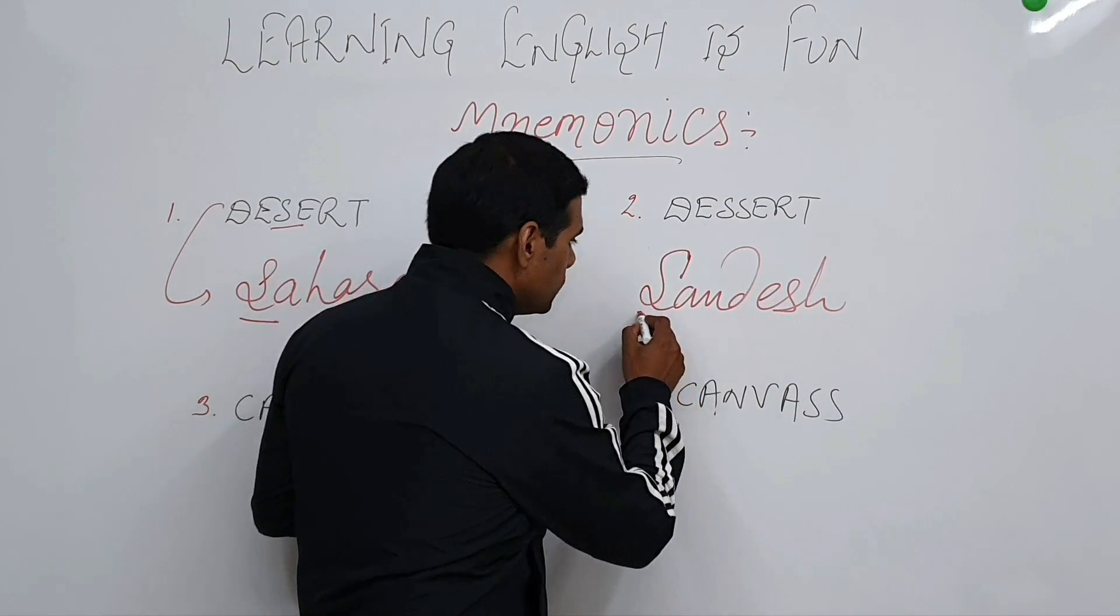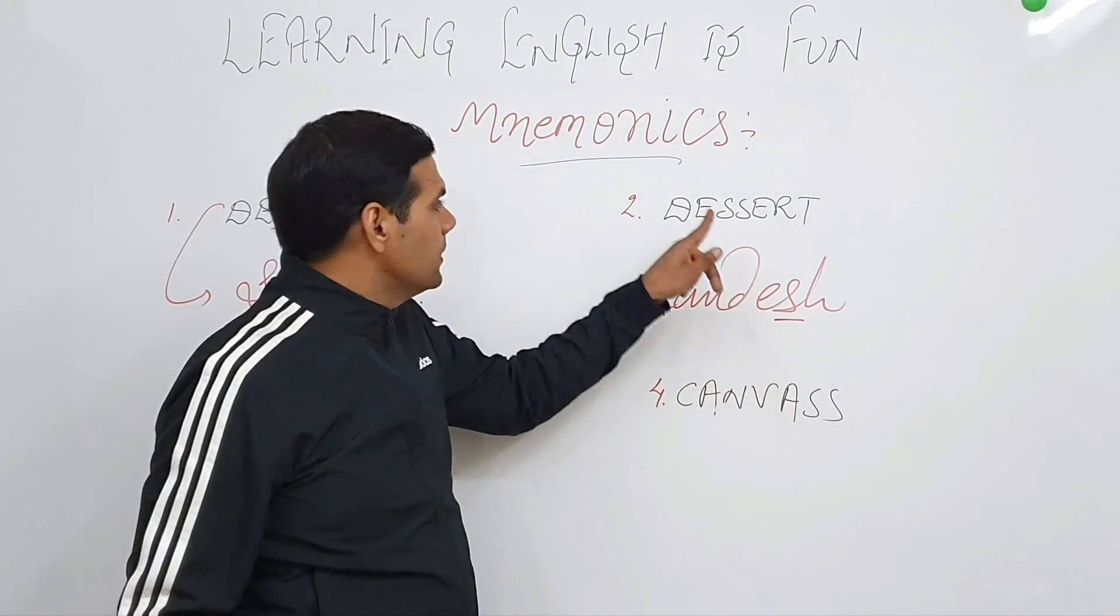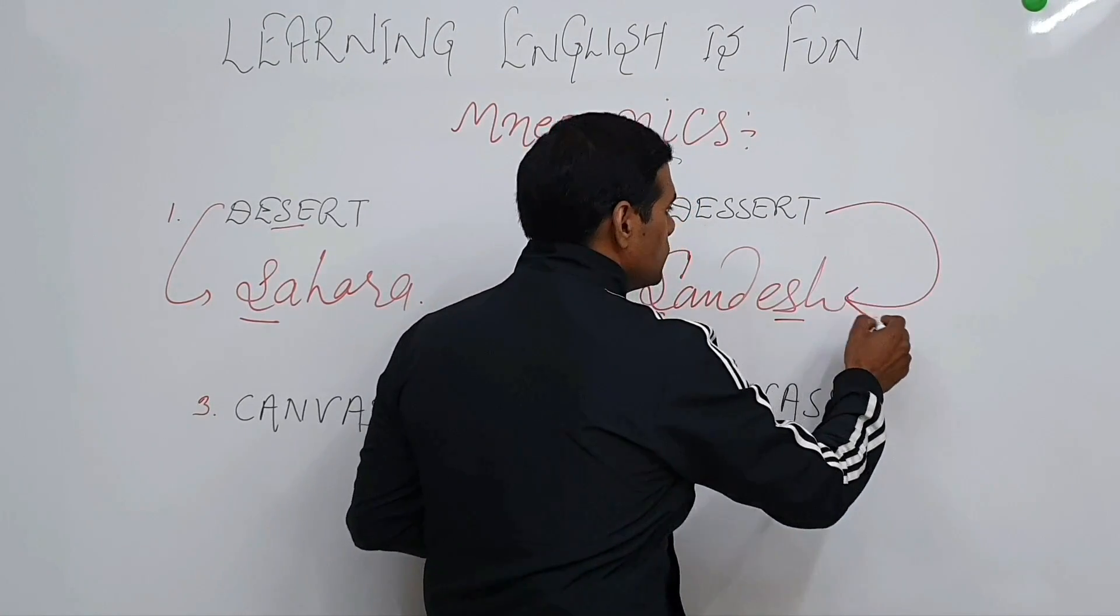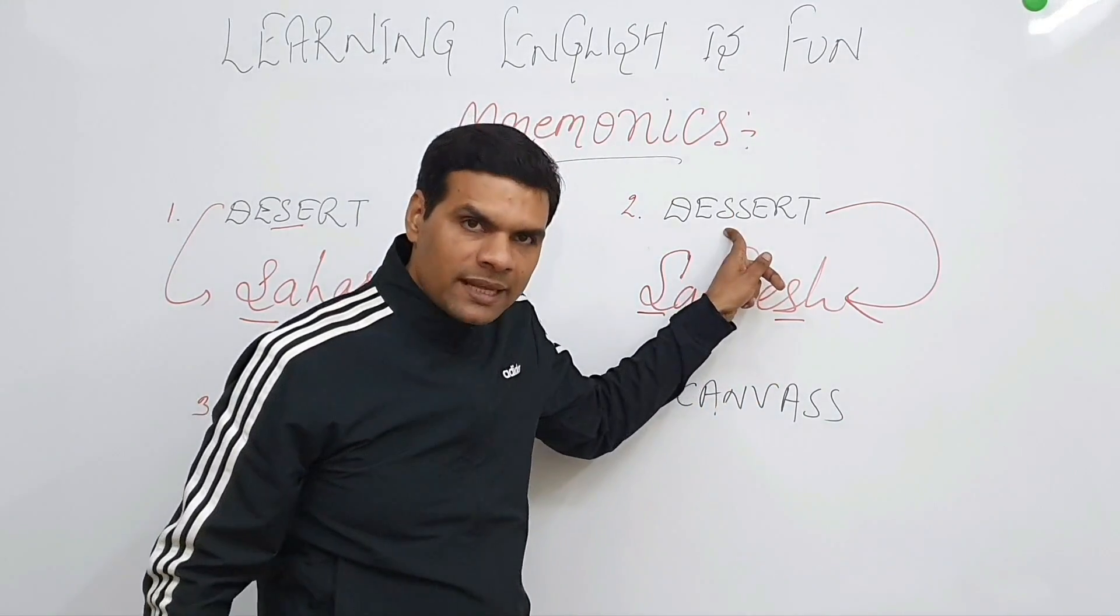So Sandesh has got two 's's, one here, the other one right here. So once you associate this word dessert with Sandesh, you will know that there are two 's' here, similarly there will be two 's' here in this span.